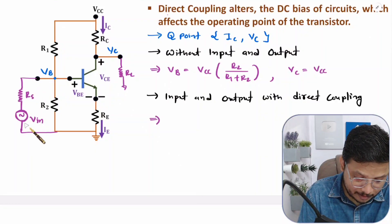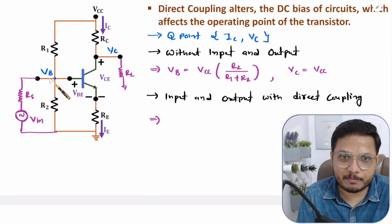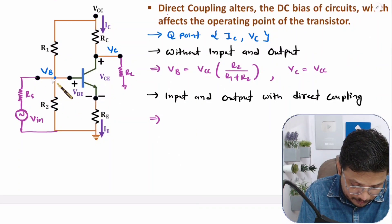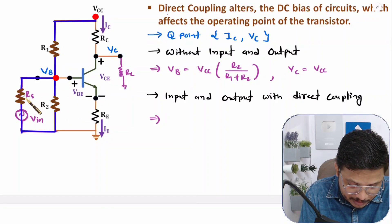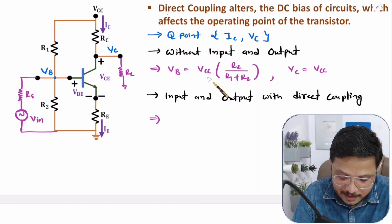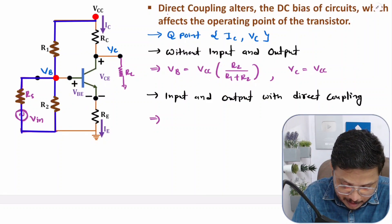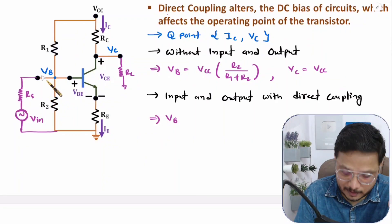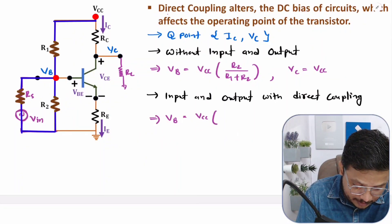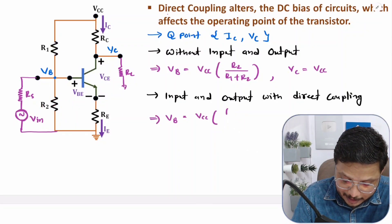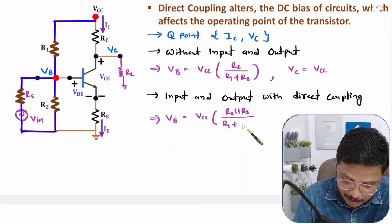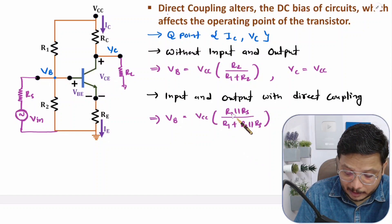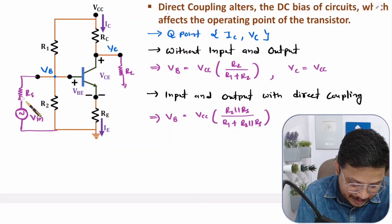So observe the input side. With Direct Coupling, the bias voltage VB is no longer determined by R2 alone. Now VB is determined by the parallel combination of R2 and RS. Previously VB = VCC × R2 / (R1 + R2), but now VB = VCC × (R2 ∥ RS) / (R1 + R2 ∥ RS). So connecting the input directly causes VB to shift — we are not talking about VIN here, but about the DC bias voltage.